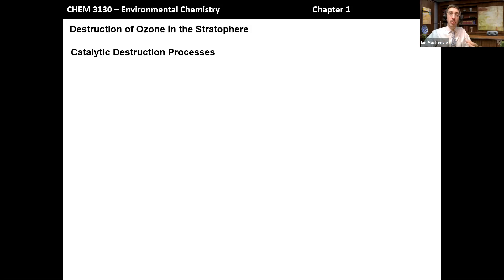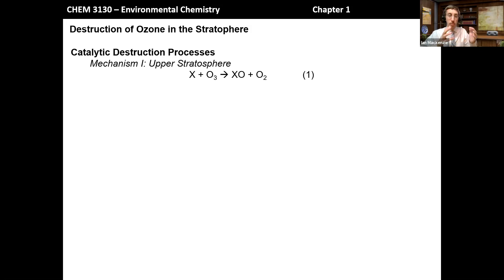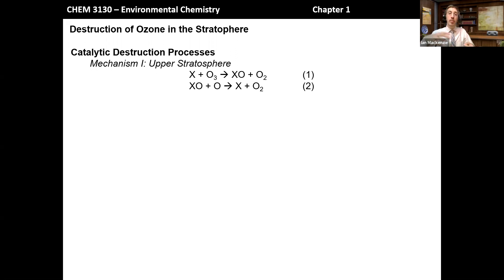Among catalytic ozone destruction processes, there are actually two mechanisms. Mechanism 1 occurs primarily in the upper stratosphere. Some X group comes and abstracts an oxygen atom from ozone in a reaction, generating an XO group and O2 — that's the first step of ozone destruction. Then this XO group reacts with a single oxygen atom that exists in the upper stratosphere, and that oxygen atom abstracts the oxygen from XO to regenerate X and form another molecule of O2.